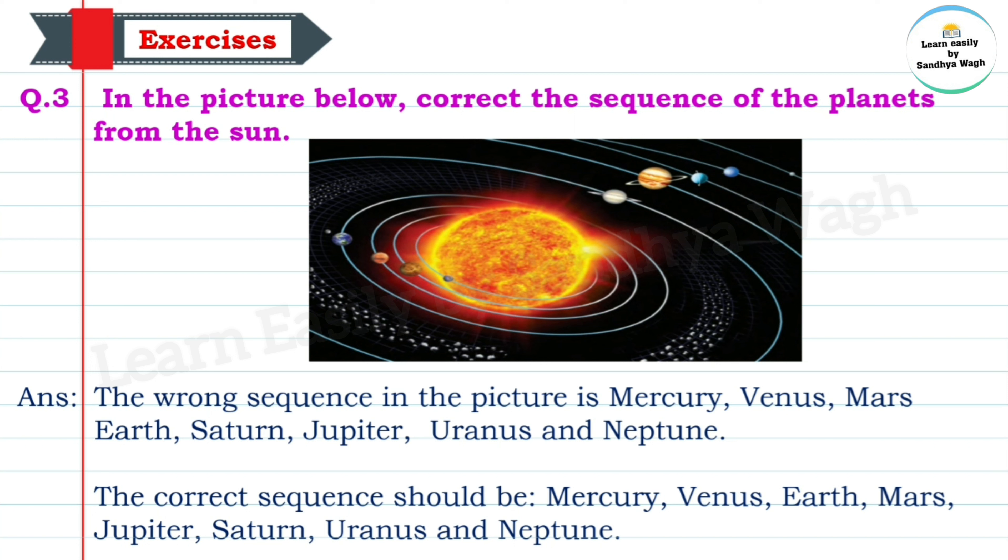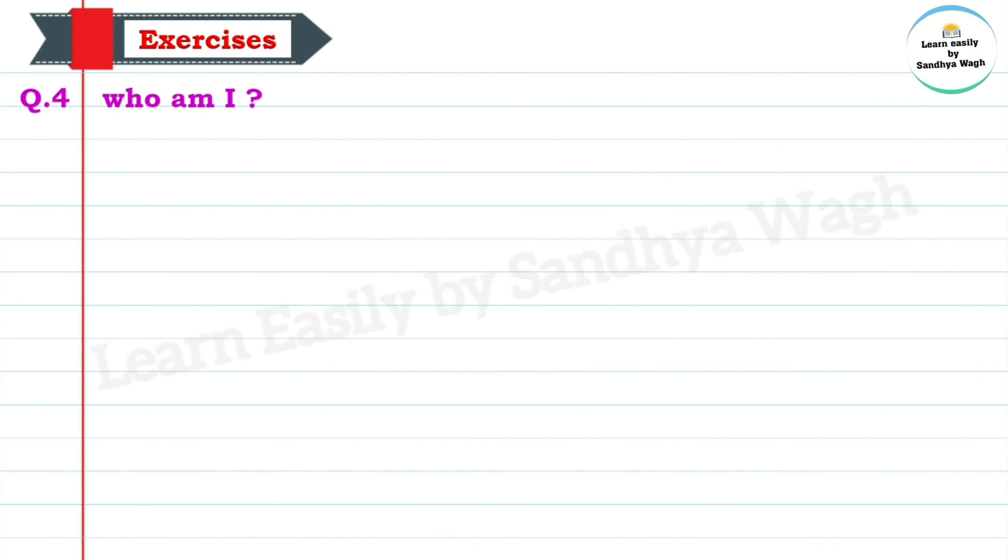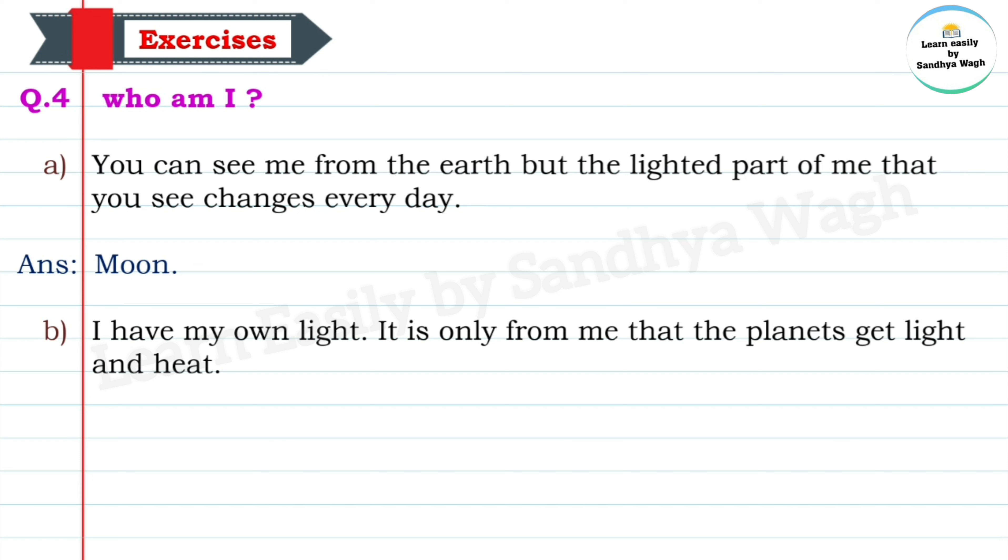Question 4: Who am I? A: You can see me from the earth, but the lighted part of me that you see changes every day. Answer: Moon. B: I have my own light. It is only from me that the planets get light and heat. Answer: Sun.